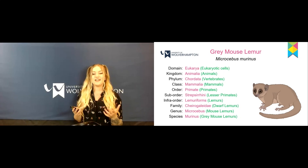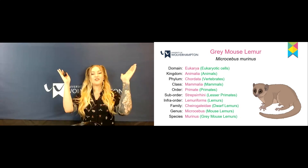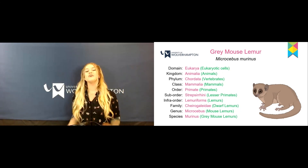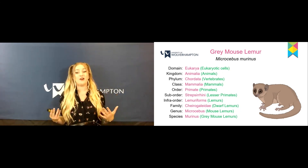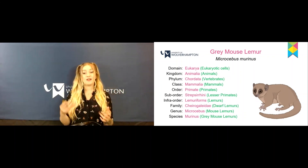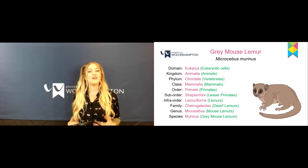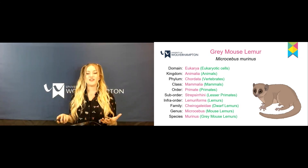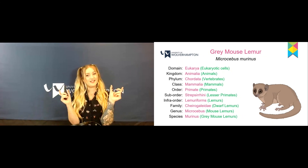So you can see how the grey mouse lemur is funnelled between these classifications. If you look at its scientific name, which is in italics below the actual name, it does say Microcebus murinus. So your scientific name is the genus and then the species.